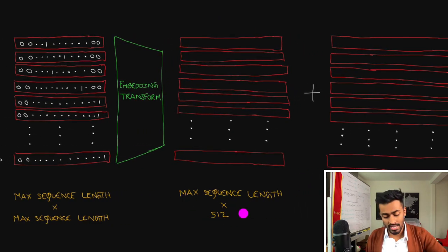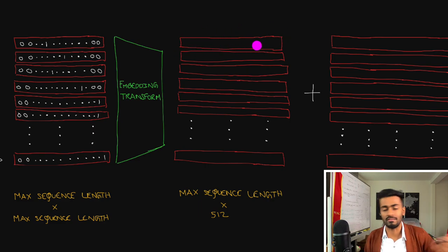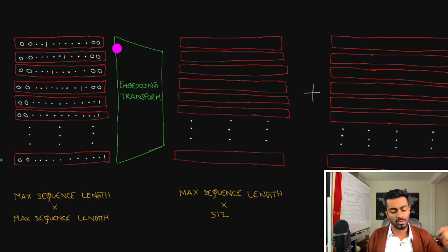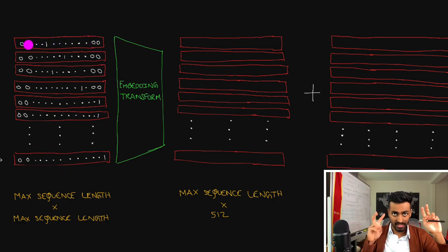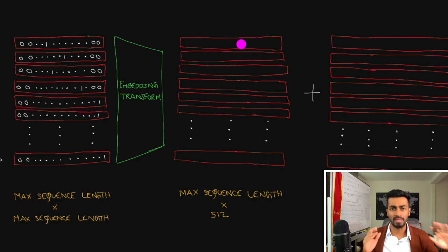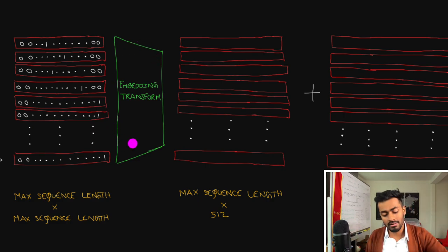For example, we might translate to 512-dimensional vectors, so each of these red rectangles corresponds to a vector of 512 dimensions. This green transformation block uses learnable parameters to map each one-hot vector — of size max_sequence_length — to a 512-dimensional embedding that encapsulates the initial meaning of the word. These parameters are learnable via backpropagation from the end of the decoder.